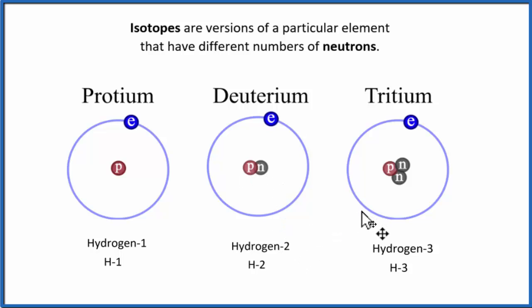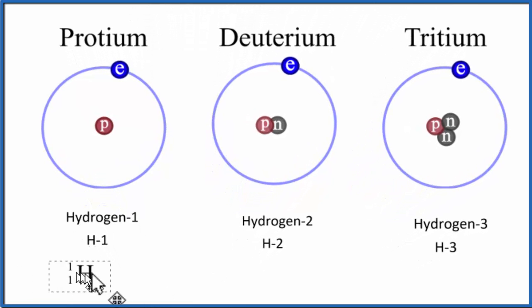We can also write something called nuclear notation, and that'll look like this: the one here on the bottom, that's the atomic number, so all of them are going to have one at the bottom because they only have one proton. On the top we have the mass number—one proton here, and this is the proton plus the neutron. Here we have two neutrons and a proton, so we have three as our mass number.